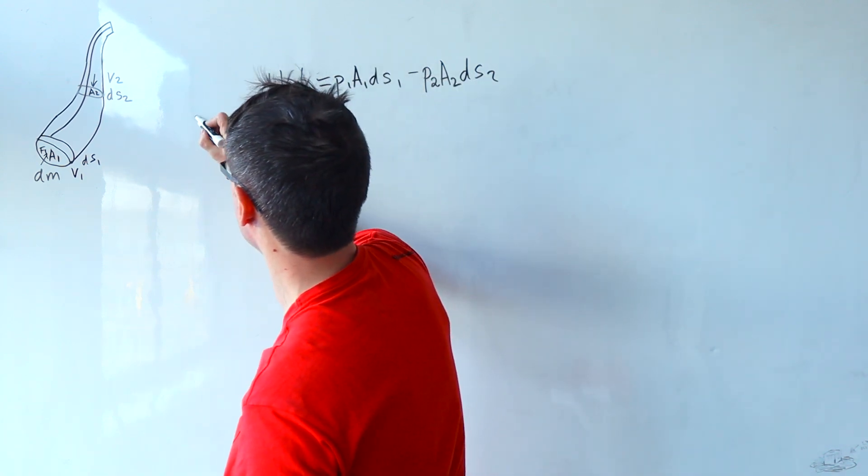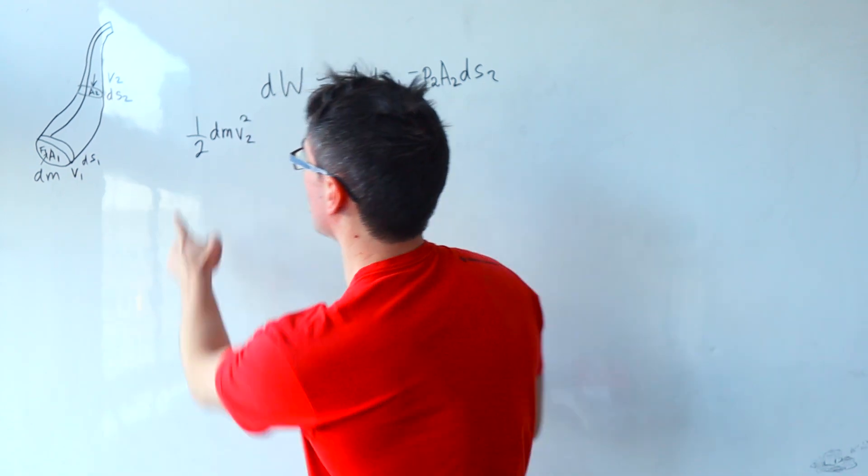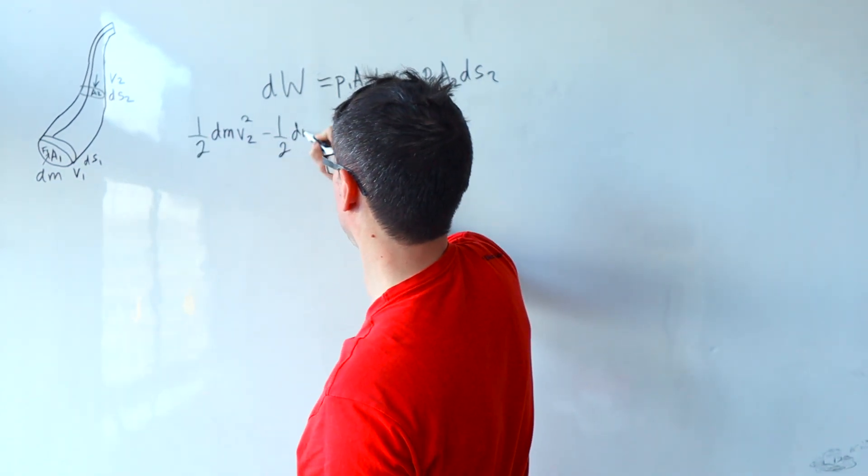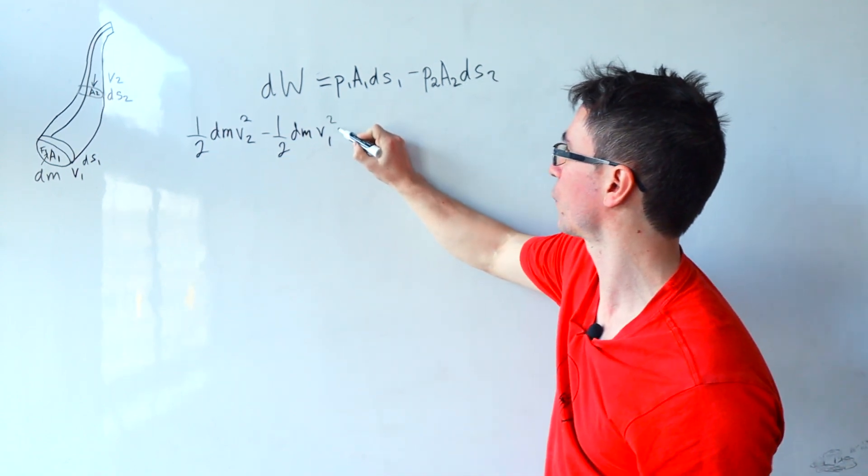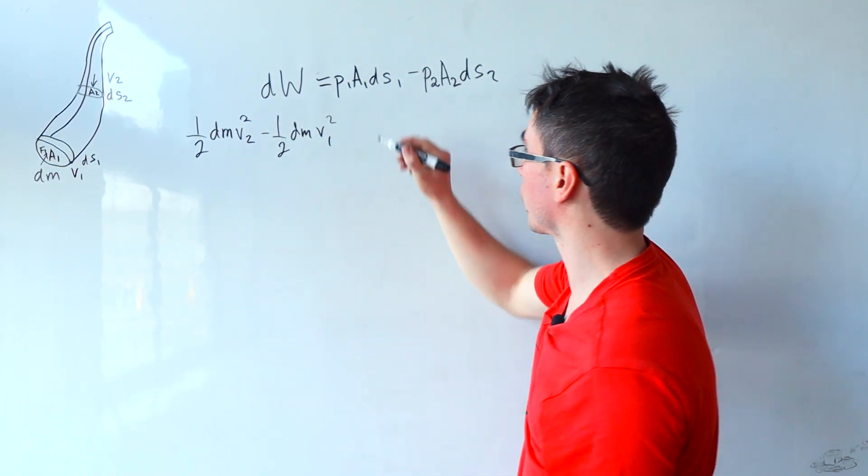So we can say that a half dm v2 squared take away a half dm v1 squared. That's just the change in kinetic energy. But the potential energy also changes.